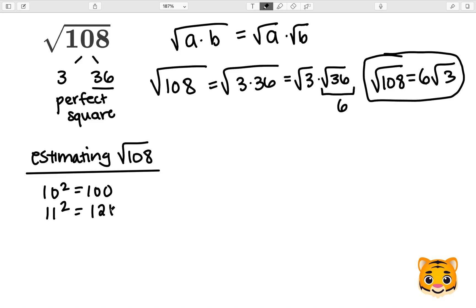As you can see, 108 is between 100 and 121. Therefore, we can write the square root of 100 is less than the square root of 108, which is less than the square root of 121.